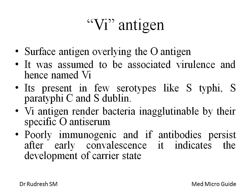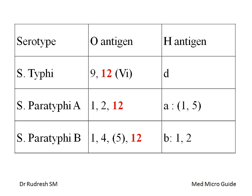There is one more antigen known as the Vi antigen, named because it was earlier assumed to be associated with virulence. It lies on the O antigen and is present in few serotypes like Salmonella typhi, paratyphi C, and dublin. The Vi antigen renders the bacteria inagglutinable by their specific O antiserum, and it is poorly immunogenic. If antibodies against the Vi antigen are found even after early convalescence, it indicates that the person is developing a carrier state.